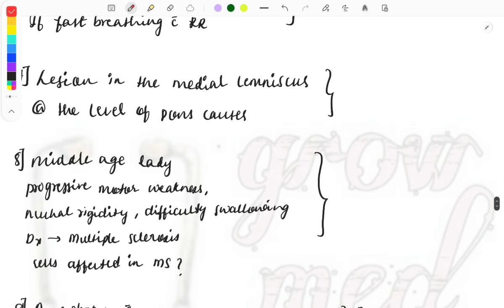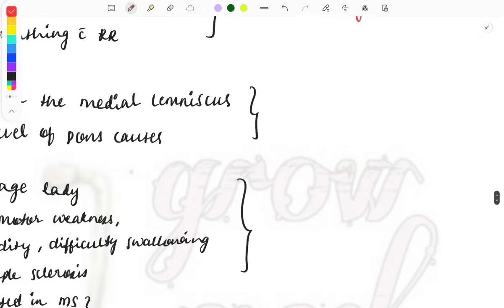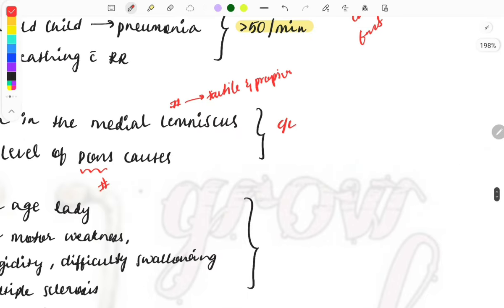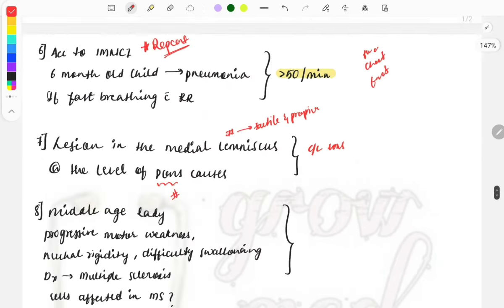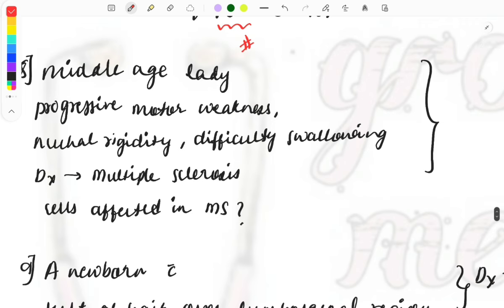Next, a case from anatomy: a lesion in the medial lemniscus at the level of the pons causes which of the following? The medial lemniscus carries fibers for proprioception and tactile sensation. When an injury occurs at the level of the pons, the effects are contralateral. Therefore, the answer is contralateral loss of tactile sensation and proprioception.